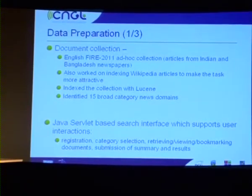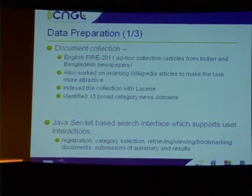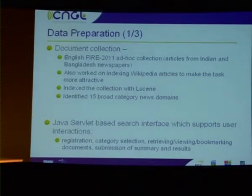The data we used — and which we also used last year — was the English Elkong Foyer collection with articles from Indian newspapers. We also worked this year on indexing the English Wikipedia, which makes the task more attractive to potential participants. We indexed all the data to come up with a baseline system, and we used the same 50 categories from last year, such as 'India,' 'Indian art,' and similar topics.